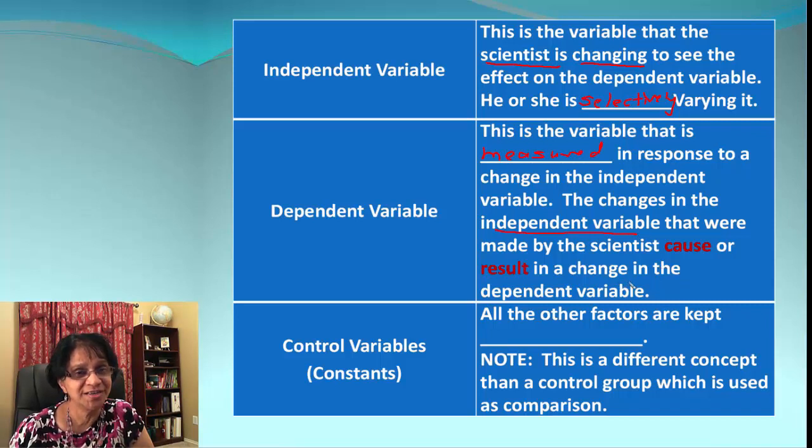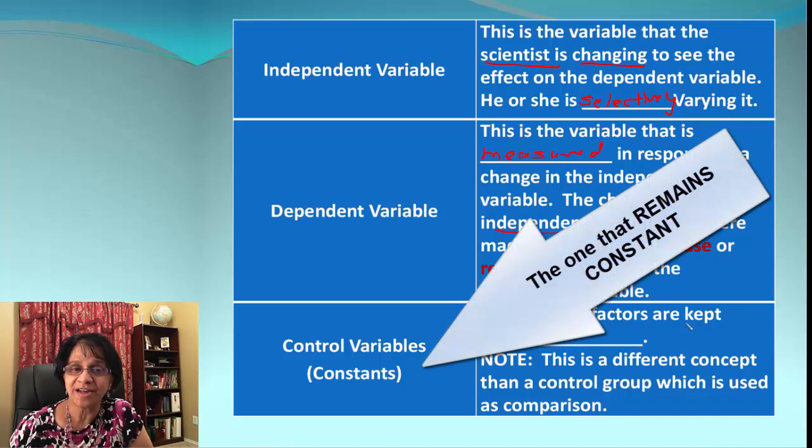Or it may not. The third one is control variables. In order for an experiment to give conclusive results, other factors must be kept constant, and those are the ones we call control variables.